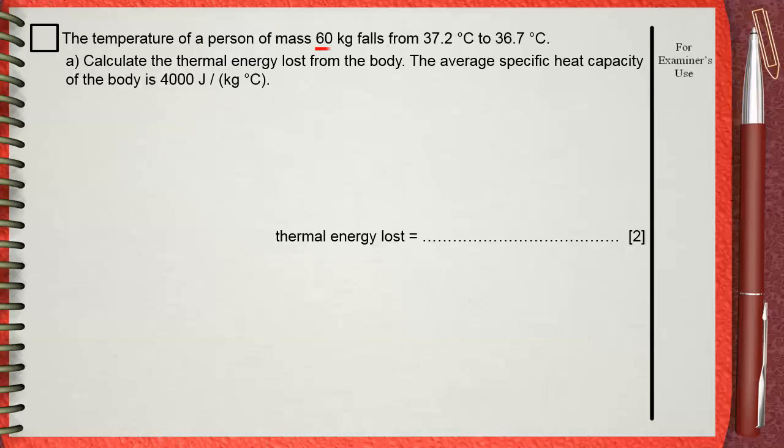We have the mass 60 kilograms. This body will cool from 37.2 to 36.7. This means that the change in temperature is 37.2 minus 36.7, which is 0.5 degrees Celsius. You have also the specific heat capacity C, which is 4000 joules per kilogram dot degrees Celsius.